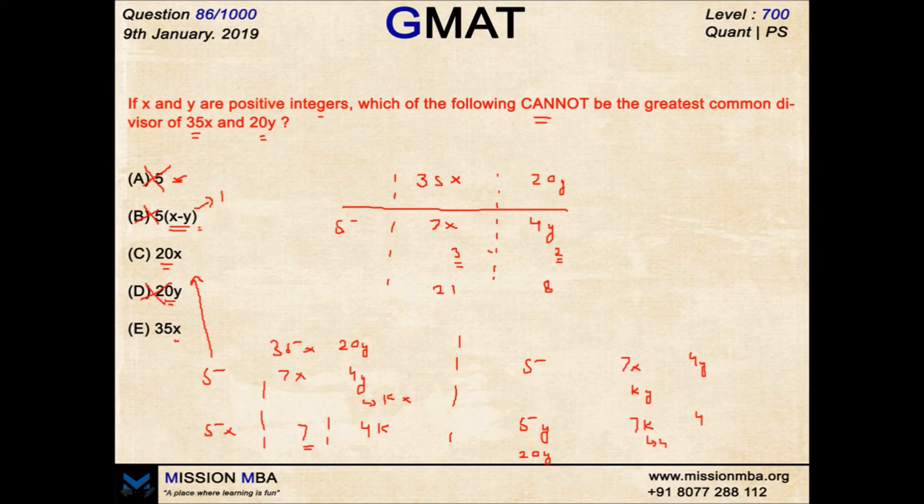Last one, 35X. So you have already taken 5 out. You have a 7X and 4Y. You need to make it 35X. Now let's write down Y as KX in order to take an X out. Now this becomes 5X. I have a 7 and a 4K. If K turns out to be 7, I can take another 7 out making this 35X. So if K turns out to be 7X, of course you will have the answer as 35Y.